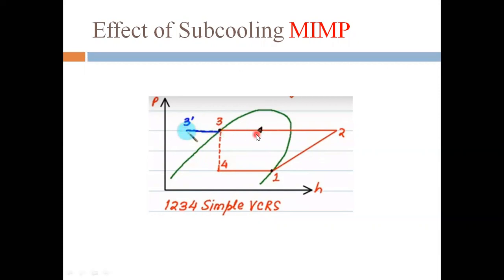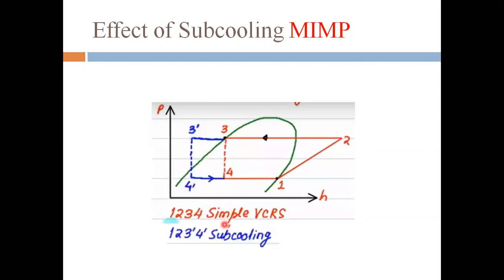We are not changing any condenser pressure or suction pressure, so the pressure lines remain the same. We are doing the sub-cooling by having extra water or by lowering the temperature of the water used for condensation. Point three shifts to three-dash, then expansion gives three-dash to four-dash, and evaporation four-dash to one is the refrigerating effect. The red cycle is the simple VCRS — one, two, three, four — and by doing sub-cooling, two new points are generated: three-dash and four-dash.